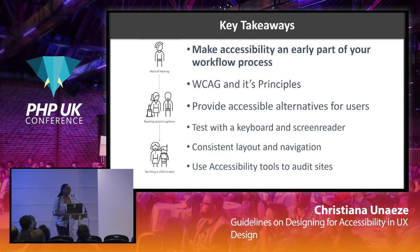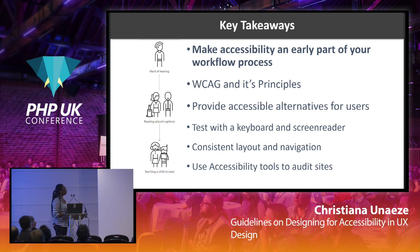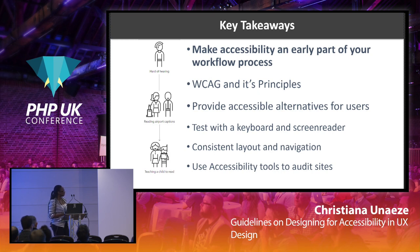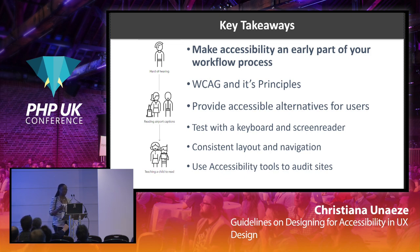The main key takeaways are: make accessibility a major part of your early workflow so it is easier to correct problems as you go. Keep in mind the Web Content Accessibility Guidelines and its principles — your code and site should be perceivable, operable, understandable, and robust. Always strive to provide alternative ways for users to access your sites and apps. Test with a keyboard and a screen reader, and be consistent with your layout and navigation. Always use accessibility tools to audit your sites so you can improve and make them better for users across the board.